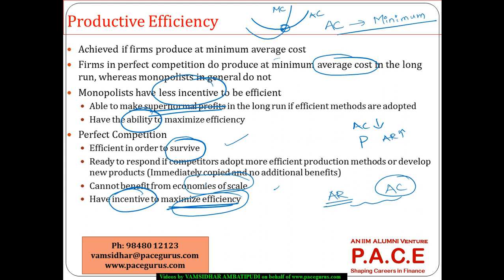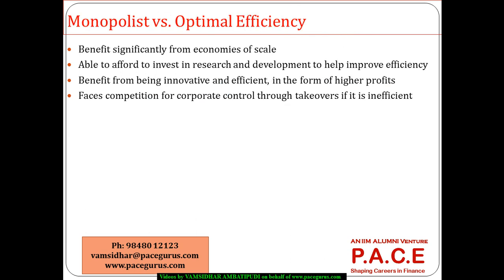For a perfectly competitive environment-based firm, efficiency is a need. Whereas for a monopolist, though it's not a need, it really makes it more and more profitable in the long run. The monopolist must use its ability to maximize efficiency through economies of scale — AR becomes much higher compared to AC, and average cost becomes much lower, so profit is drastically higher.